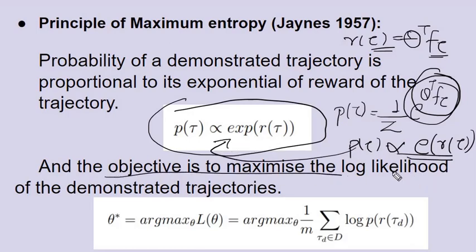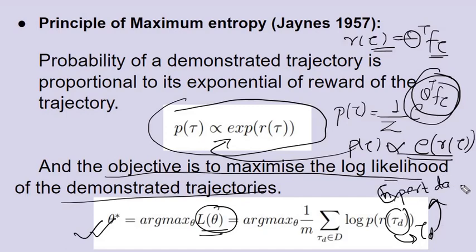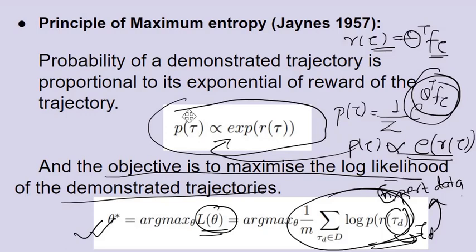The objective is also to maximize the log likelihood of the demonstrated trajectories, meaning we want to maximize the log likelihood of the expert data — trajectories created by human experts — while also matching the feature counts. We're going to solve for the value of theta in the next video, as this video is already quite long. Thank you for watching.